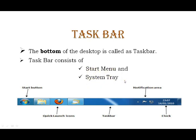If we look at the image, we can see the task bar. At the left corner is the start menu, and at the right corner is the system tray. The start menu is displayed when you click the start button. The system tray is called the notification area and is present in the right corner.